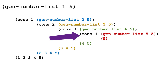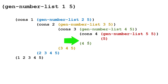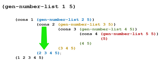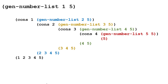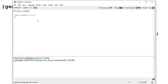To get gen-number-list of 4 and 5, we cons 4 onto gen-number-list of 5 and 5, which is our base case — the list with just 5. Then consing 4 gives us (4 5), consing 3 gives (3 4 5), consing 2 gives (2 3 4 5), and finally consing 1 gives us the list (1 2 3 4 5).